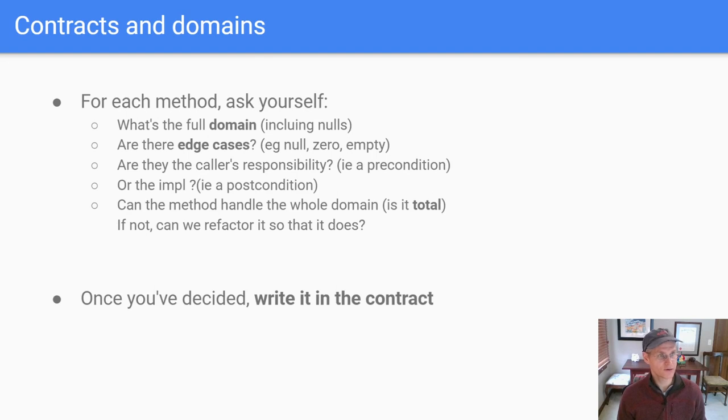So when you go to write the contract for each one of your methods, you're asking yourself, what is the full domain, including those nulls we just talked about? Are there edge cases that are particular to this method? For example, nulls, zeros, empties, these are all common things. For each of those edge cases, is it the caller's responsibility or is it the implementation's responsibility? If it's the caller's responsibility, for example, don't ever pass me nulls, that might be the precondition. I'm not going to check, but if you call and you pass me a null, all bets are off. Precondition, that's a caller's responsibility. Or if you say, you can pass me anything you want, and so there's no preconditions, then you probably want to write it in a postcondition that says, if you happen to pass me null, I'm going to throw null pointer exception.